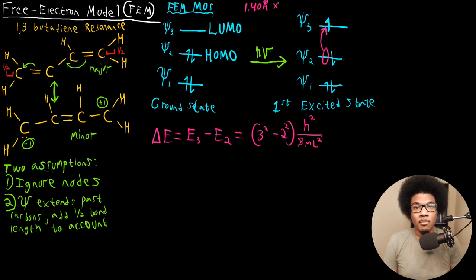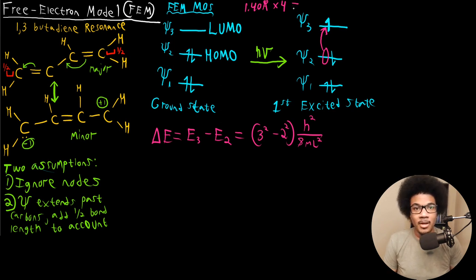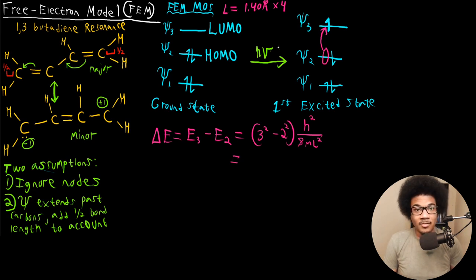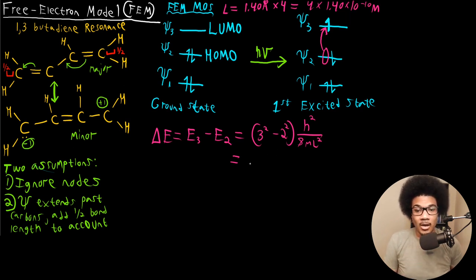To get the length of the box, I'm going to multiply 1.40 angstroms by 4. The reason I'm multiplying by 4 is that we have 3 bonds, but we're also adding a half bond length on each end — half plus a half is one whole extra bond, so we multiply by 4 to get the full length of the box. So L equals 1.40 angstroms times 4, which in SI units is 4 times 1.40 times 10 to the negative 10 meters.